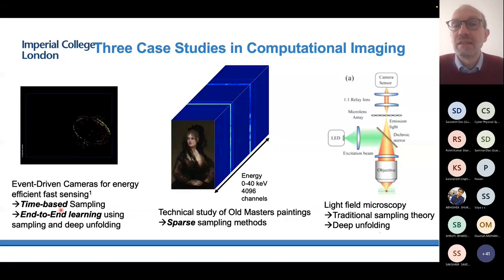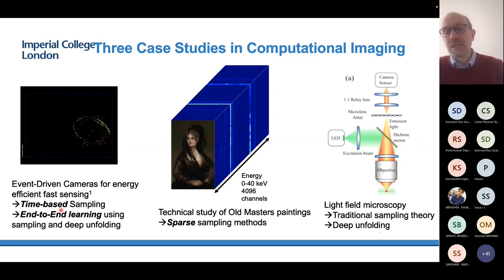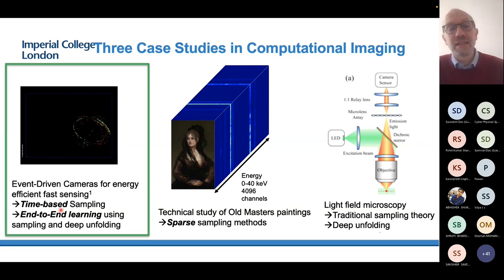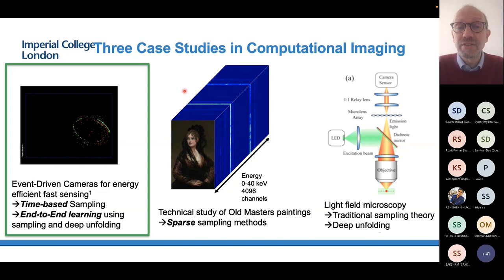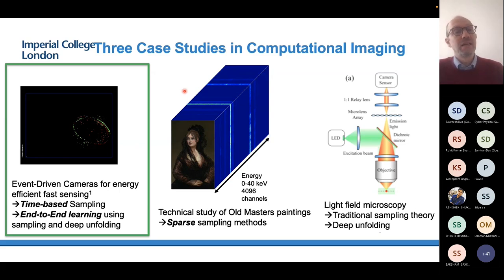I'll do all these through some examples of computational imaging problems that we have looked at over the last few years. So I will start by talking about event-driven cameras. These are a new type of video cameras which are bio-inspired, sort of have pixels behaving like neurons in the brain.